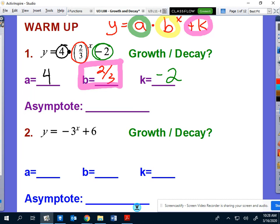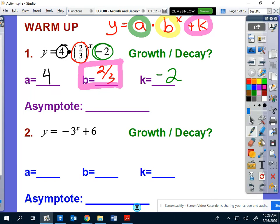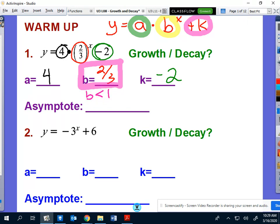And in this case, because my b value, the b value here is less than one. So two thirds, your b value here is less than one. That means that we are not growing, but we are decaying.